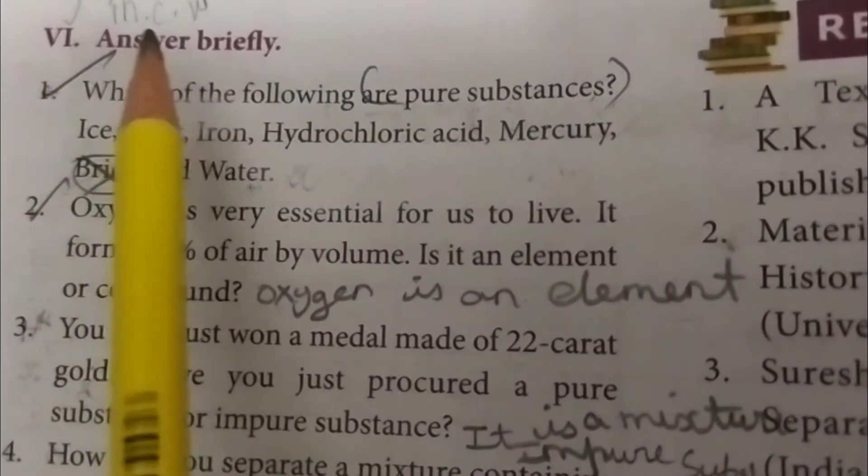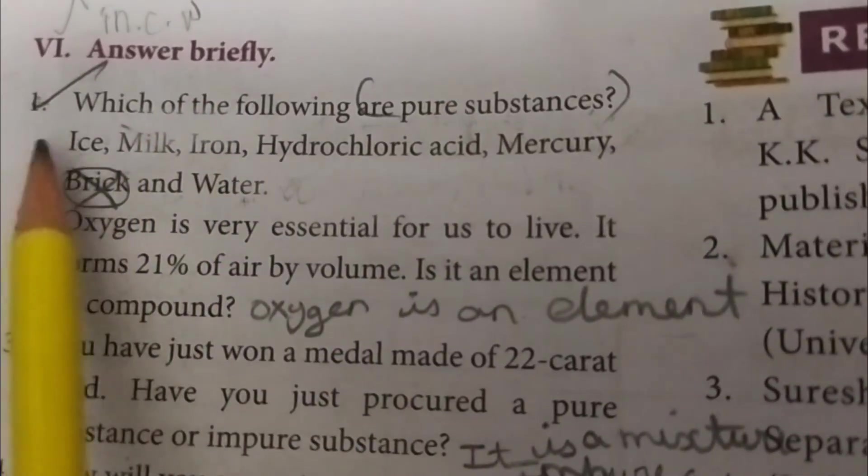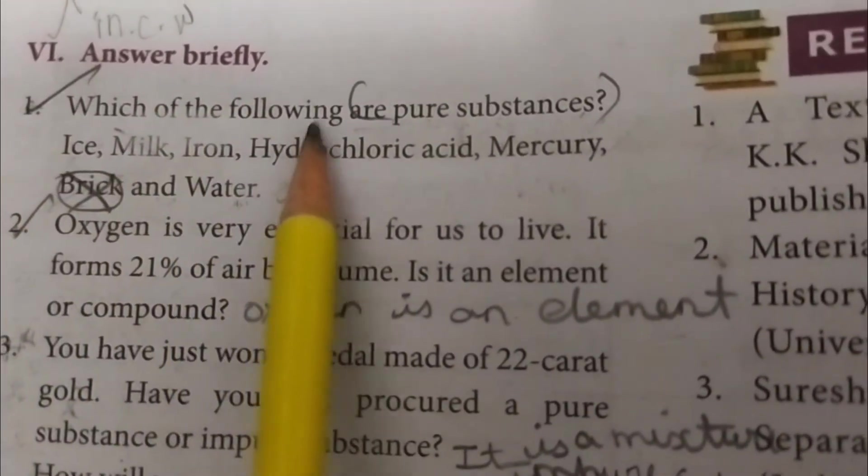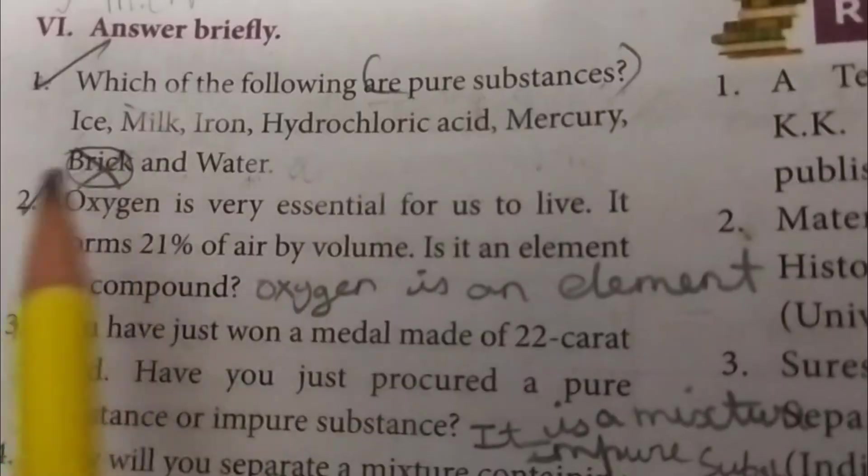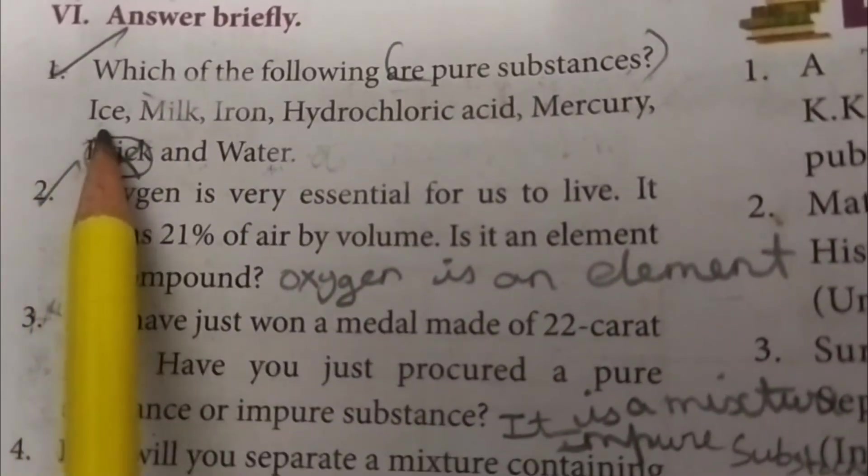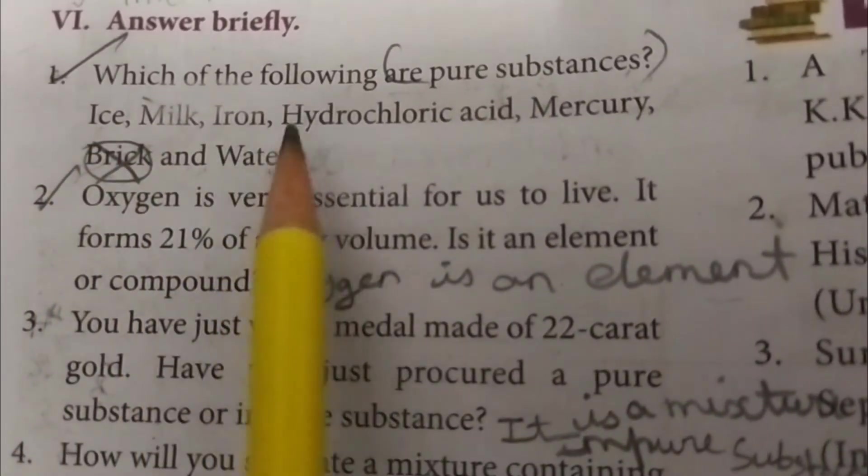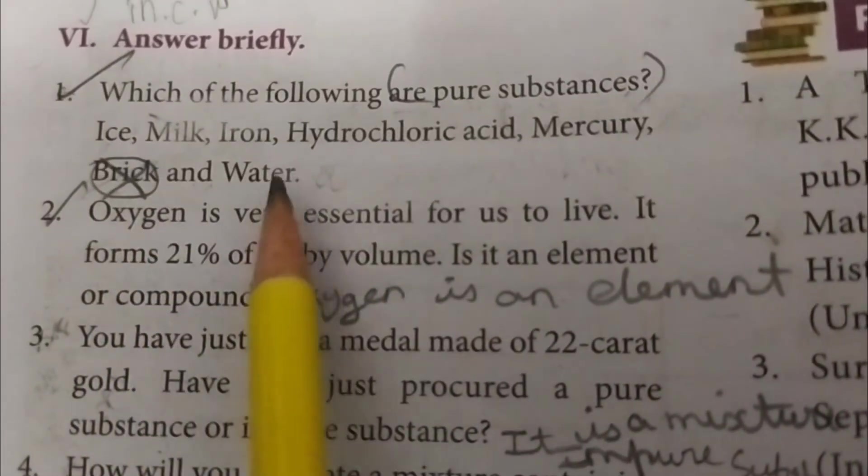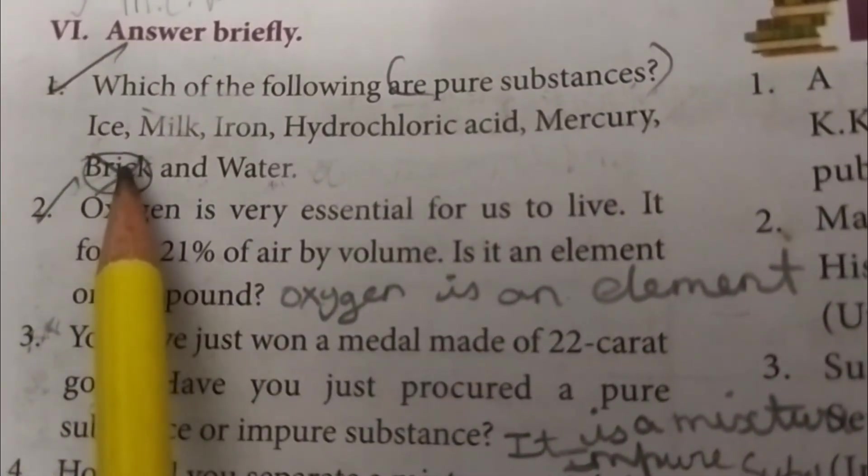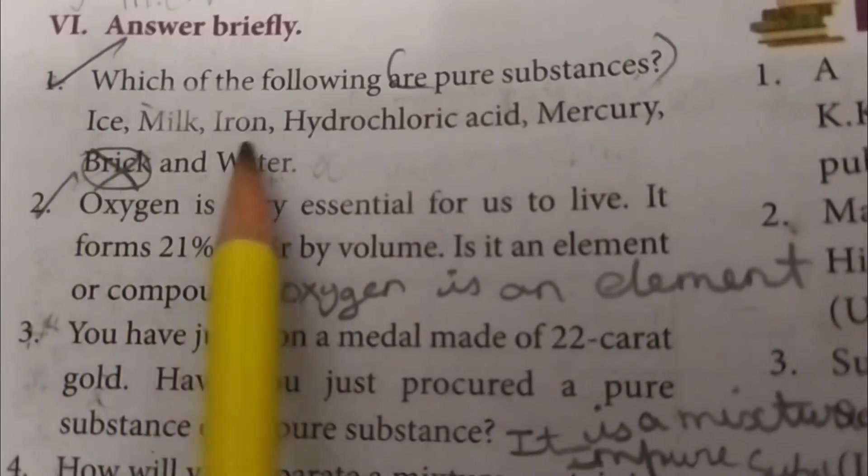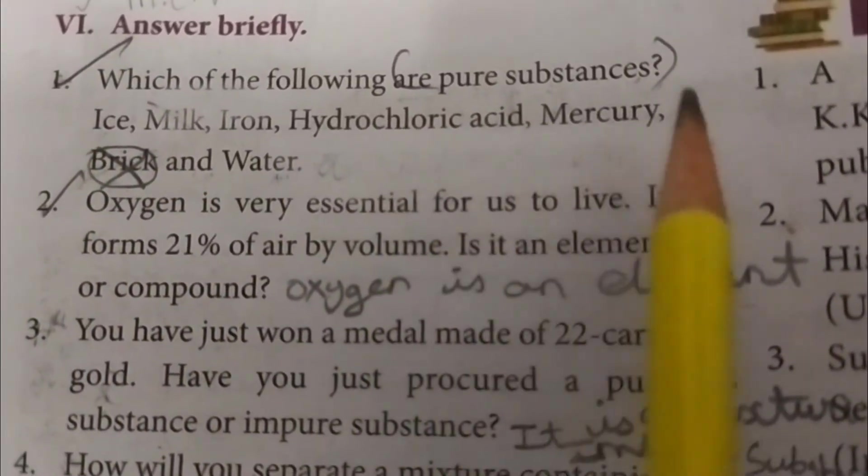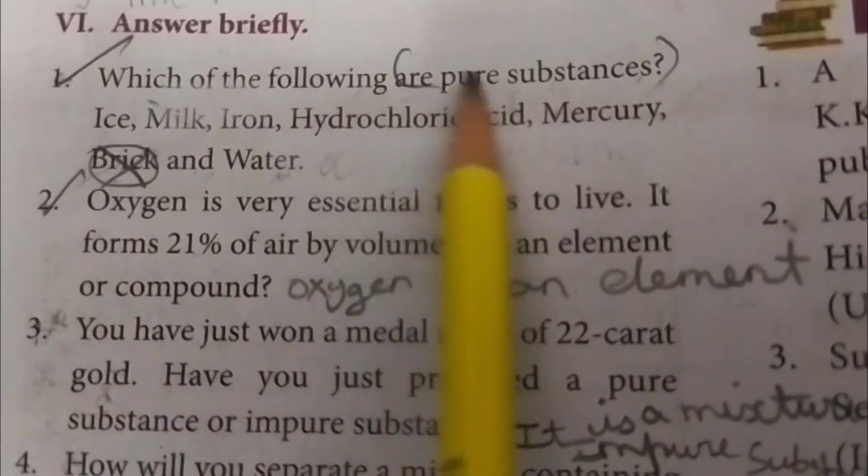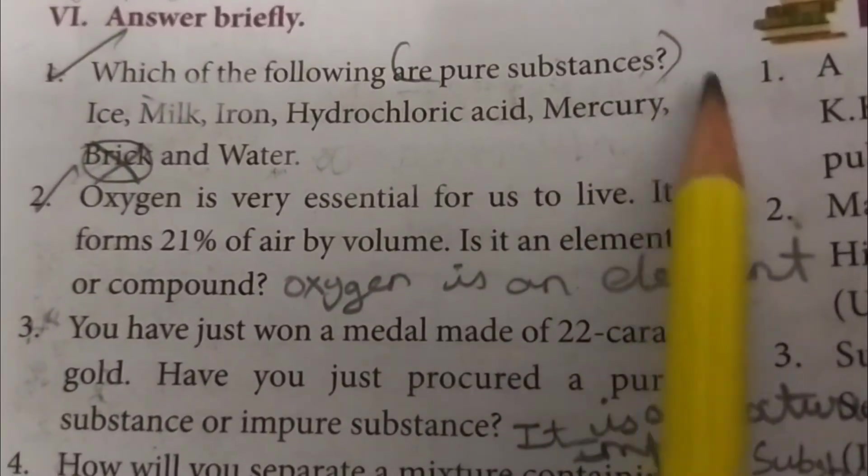Sixth: Answer briefly. First question: Which of the following are pure substances? Ice, milk, iron, hydrochloric acid, mercury, brick, and water. Answer: Ice, iron, hydrochloric acid, mercury, and water are pure substances.